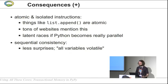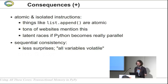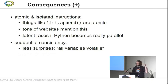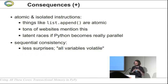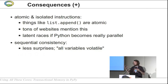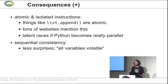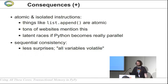This has positive and negative consequences. The positive consequence for the user of Python is that some operations are atomic — for example, list.append or setting an item in a dictionary. Even in a multi-threaded program, another thread trying to update the same dictionary won't corrupt its internal state or cause obscure crashes. In that sense, all variables are effectively volatile.